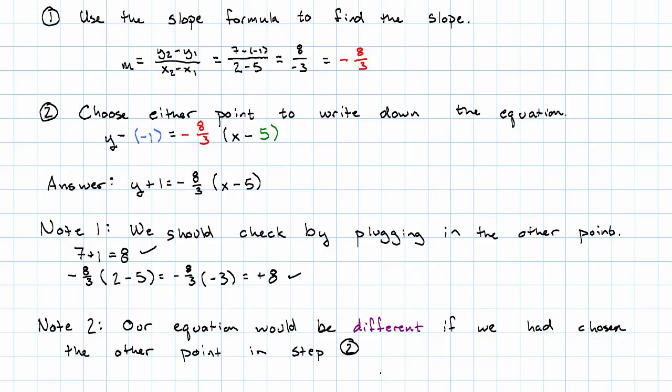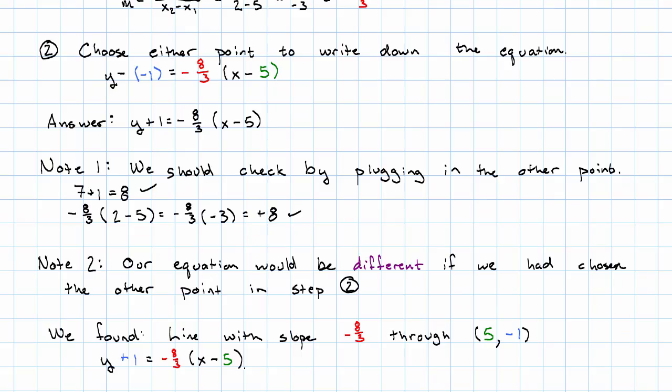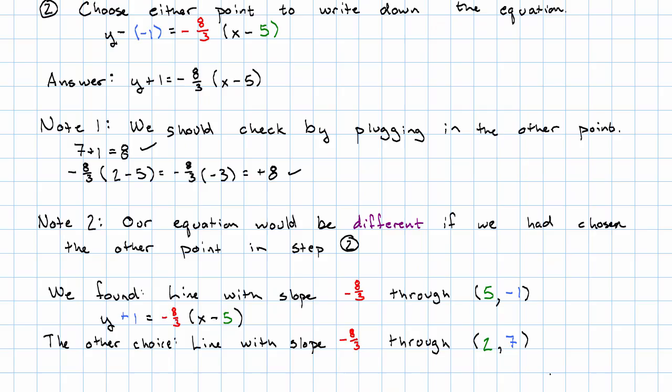We would have gotten a different equation if we had chosen the other point in step 2. What we chose to find was the line with slope negative 8 thirds through the point (5, -1). The other choice we could have made would be to write the equation of the line with slope negative 8 thirds through (2, 7).